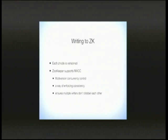When writing to ZooKeeper, each Z node is versioned — it's a monotonically incrementing number that changes every time you write to it. This lets ZooKeeper support something called MVCC, or multi-version concurrency control. If you've ever dealt with CouchDB, you know what this is. Essentially it's a way of enforcing consistency and making sure that multiple writers don't clobber each other. You need to understand the current version of an object before you change it, because that ensures you understand the change you're invoking.